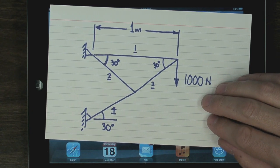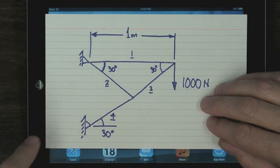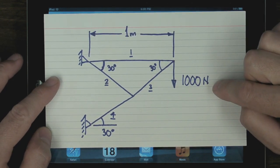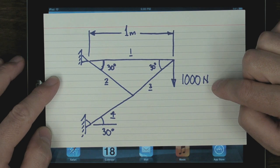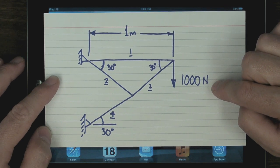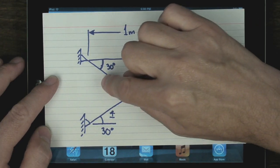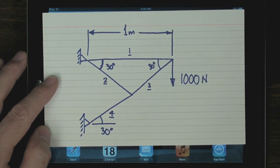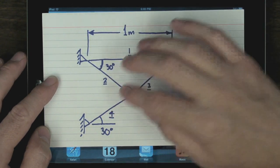This is a four-bar truss, and it's pinned here and here. I've got a distance of one meter across here, and I've got a vertical force of a thousand newtons, one kilonewton, at the right end. I've numbered the bars one, two, three, and four. The original problem was to find the force in bar four.